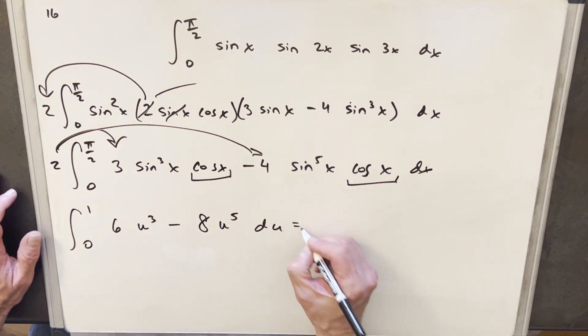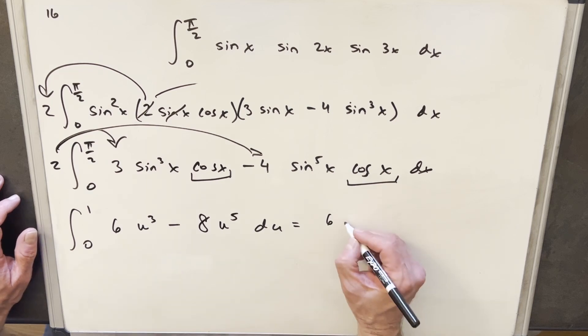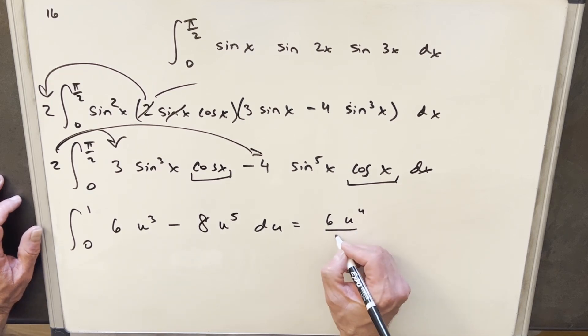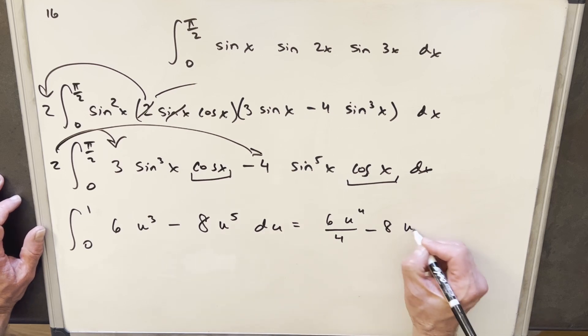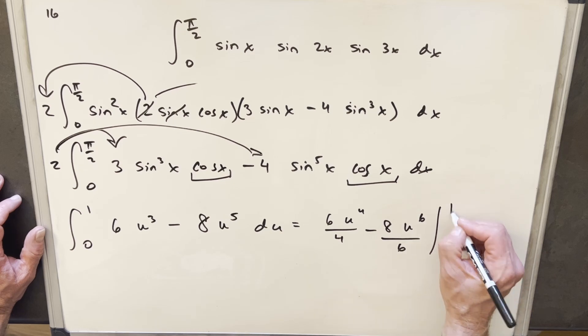Now I'm just going to integrate using the power rule, so for the first term we're going to have 6u to the 4, divide 4, minus 8, and then here we're going to power rule again, u to the 6, over 6. Of course we can reduce this, and we're going from 0 to 1.